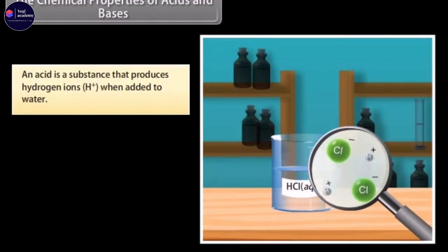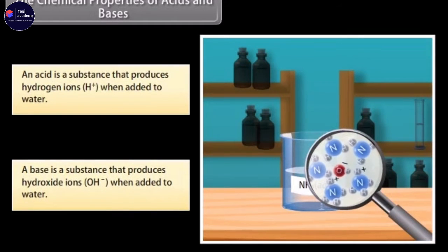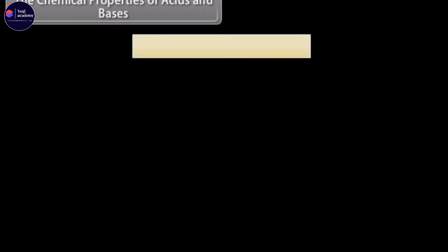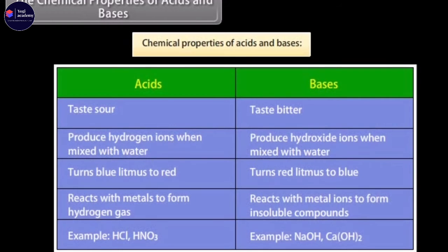An acid is a substance that produces hydrogen ions when added to water, whereas a base is a substance that produces hydroxide ions when added to water. Both acids and bases have different chemical properties.